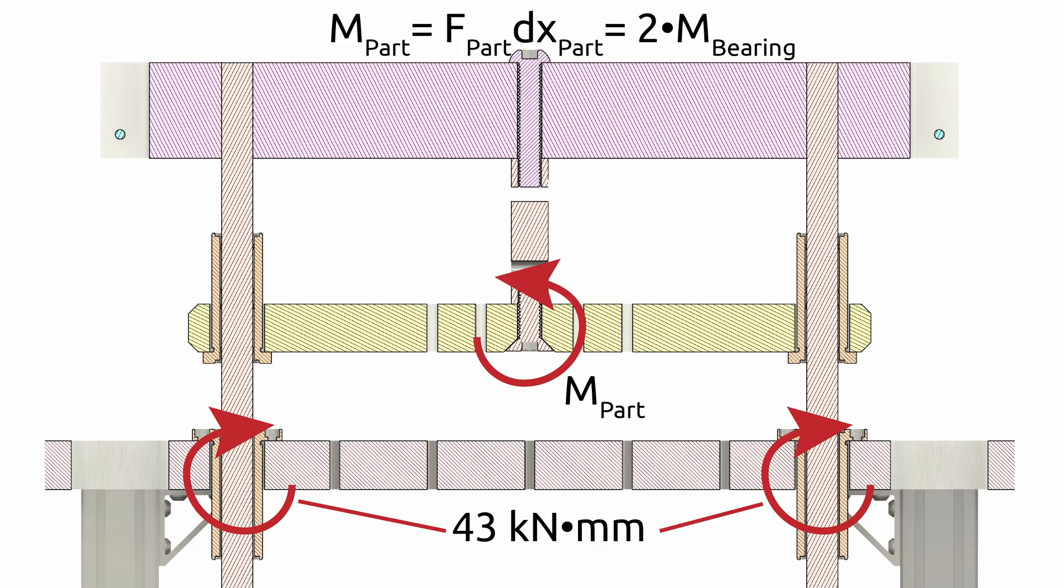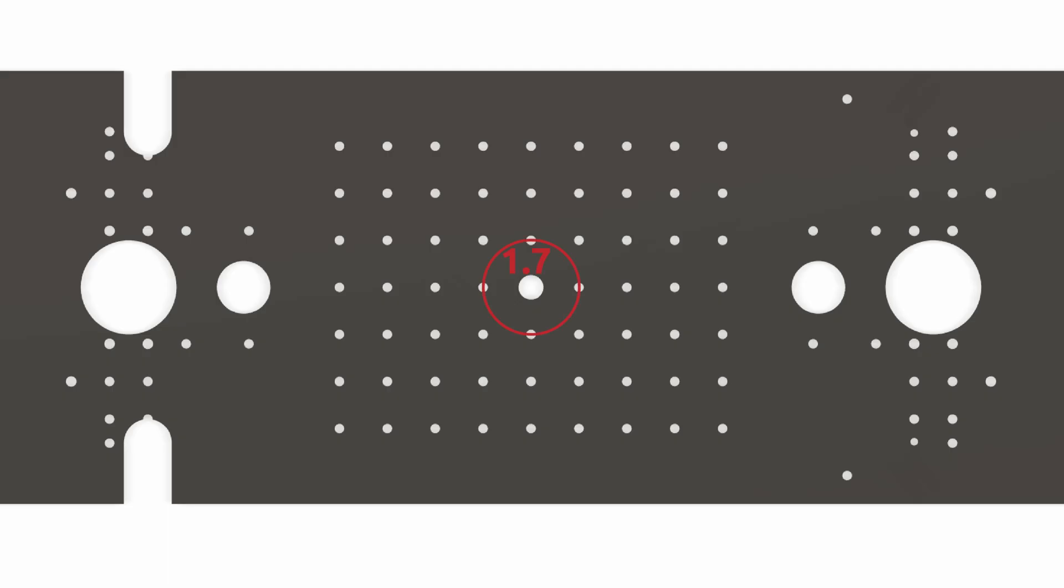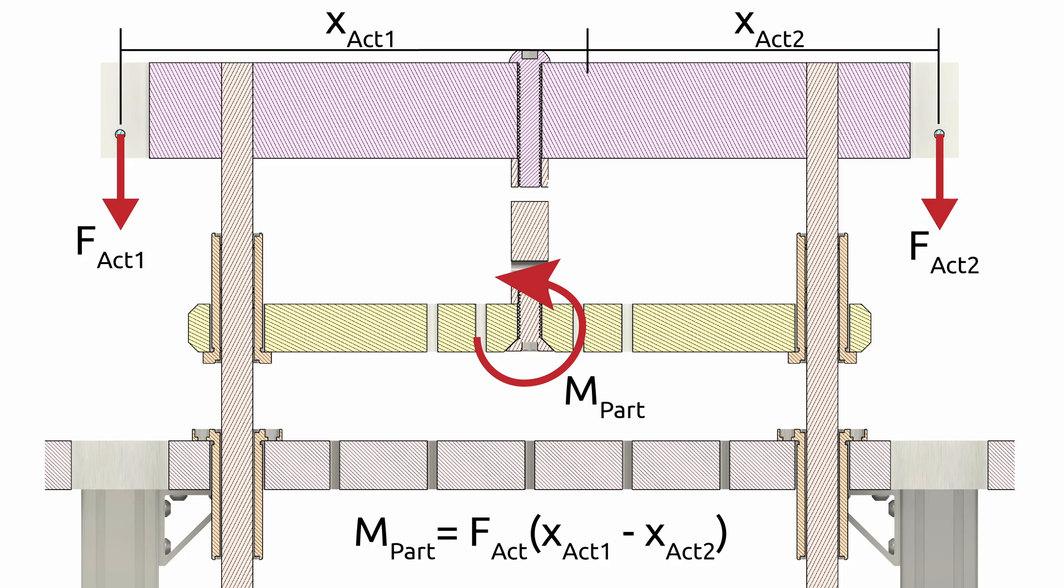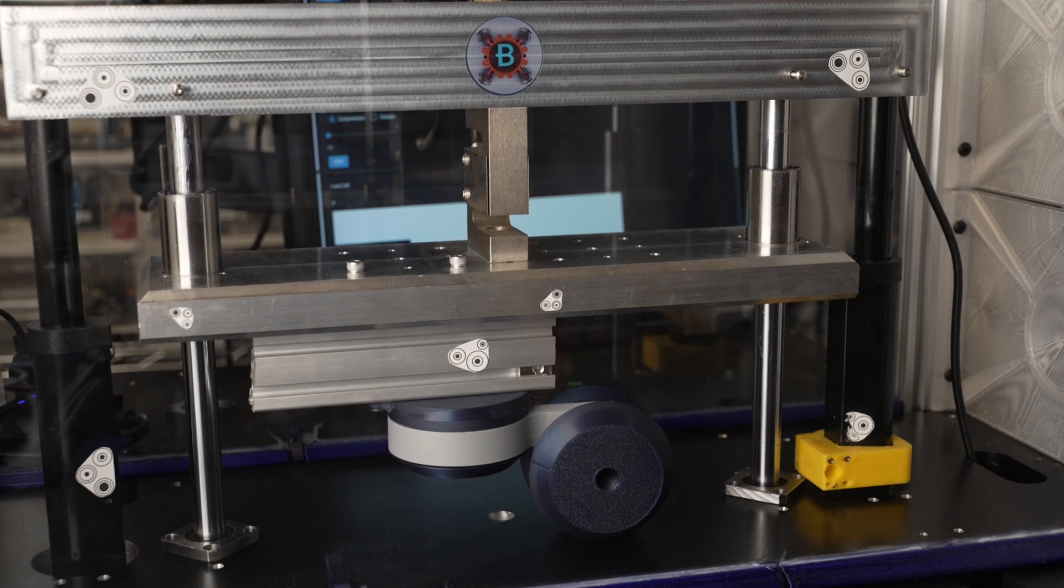Using that bearing rating, I can assign a max allowable load as a function of part offset, and as long as I stay within 20mm of the center, I can apply the full 2kN capacity. If I want to test something further out than that, I just have to derate my max load accordingly. Easy enough. One big assumption here, among many, is that the actuators both exert the same force, which of course won't exactly be the case, but it'll have to do for now.